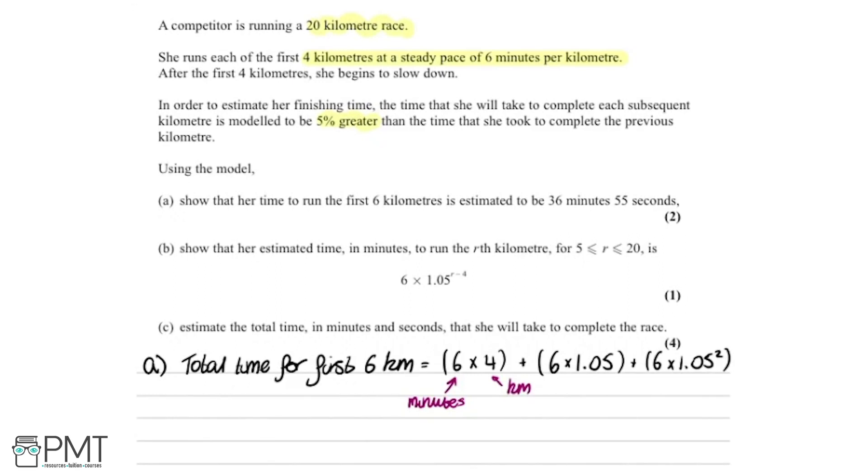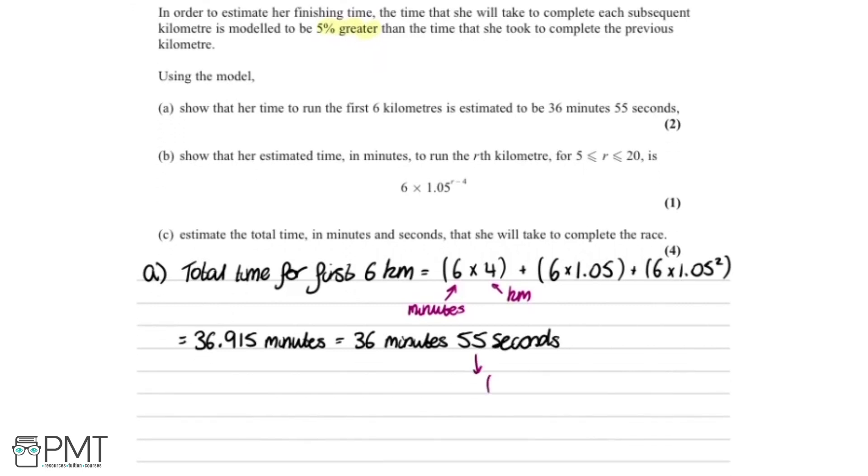So working that out by putting it into the calculator, we get 36.915 minutes. However, we want to write that in minutes and seconds, so we've got 36 minutes and 0.915 of a minute, which is 55 seconds. The reason for that is we've got one minute which is 60 seconds times by 0.915, which equals 54.9, which is approximately 55. So that's the answer to part A.